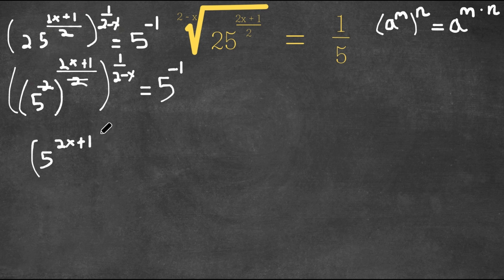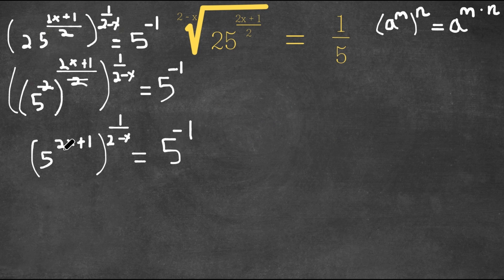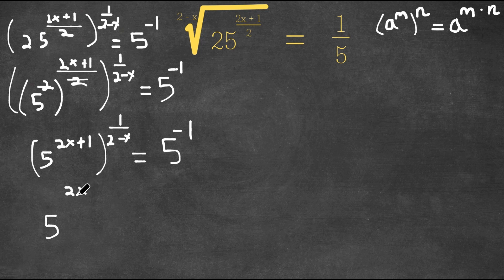We are still raising this to the power of 1 over 2 minus x, and this equals 5 to the power of negative 1. Using the same property again: 5 to the power of 2x plus 1, to the power of 1 over 2 minus x — multiplying these gives us 5 to the power of 2x plus 1 over 2 minus x, equals 5 to the power of negative 1.